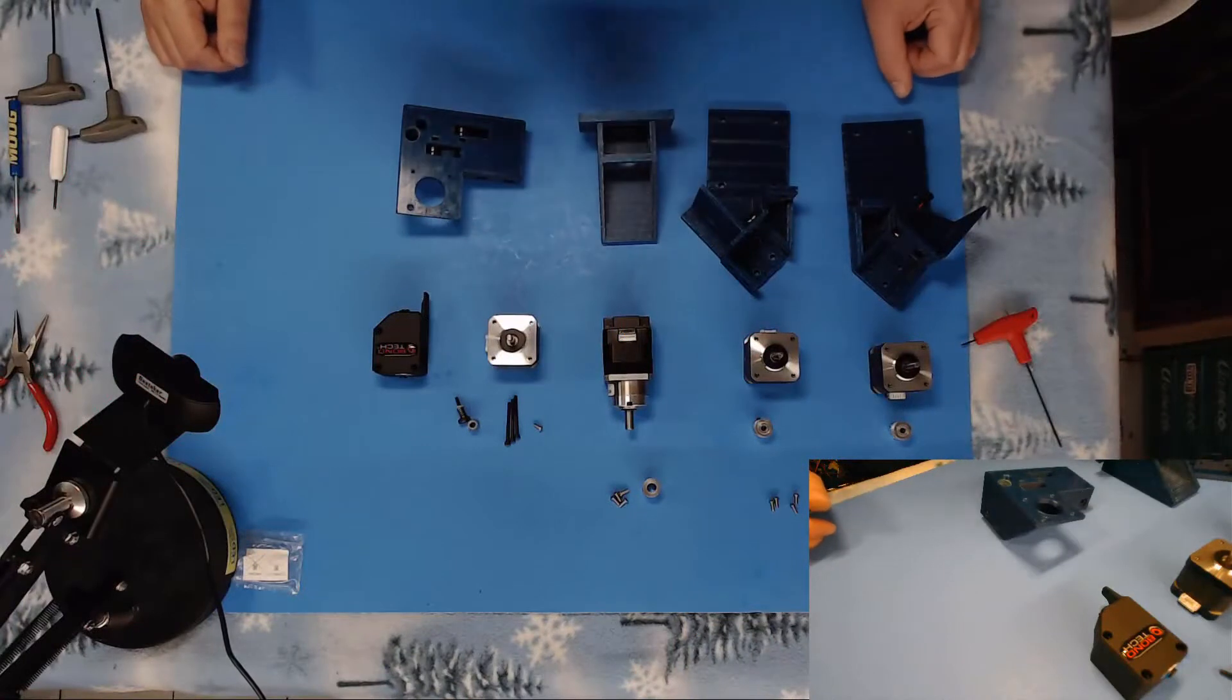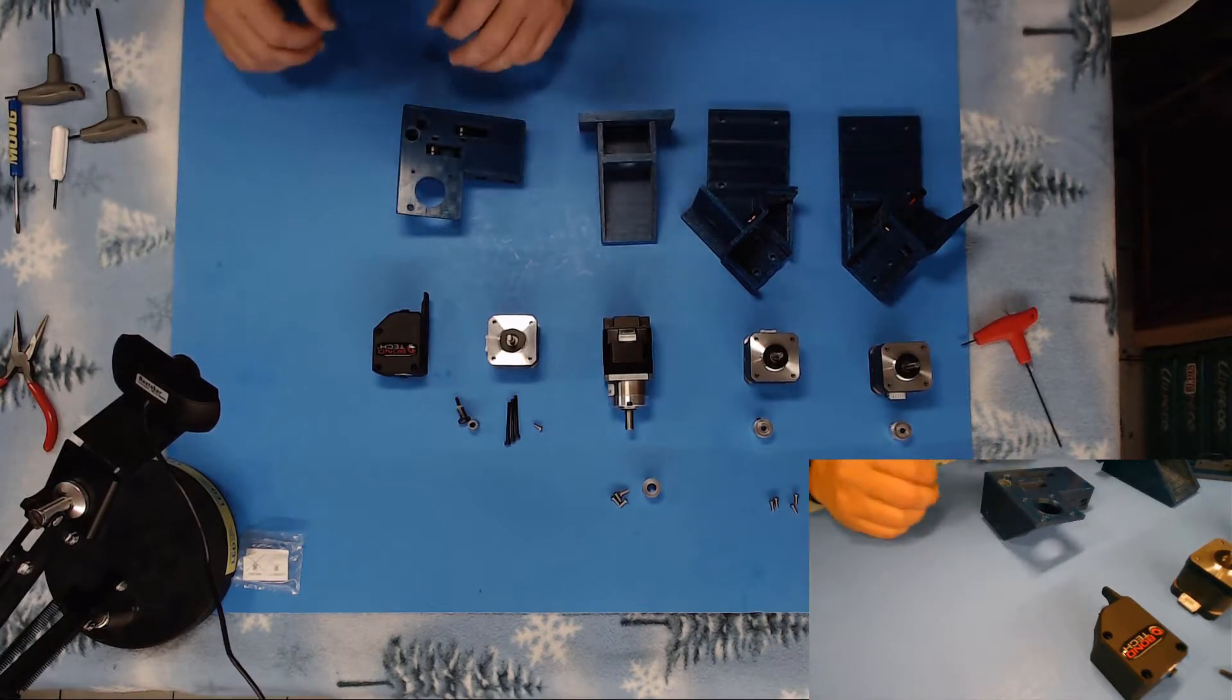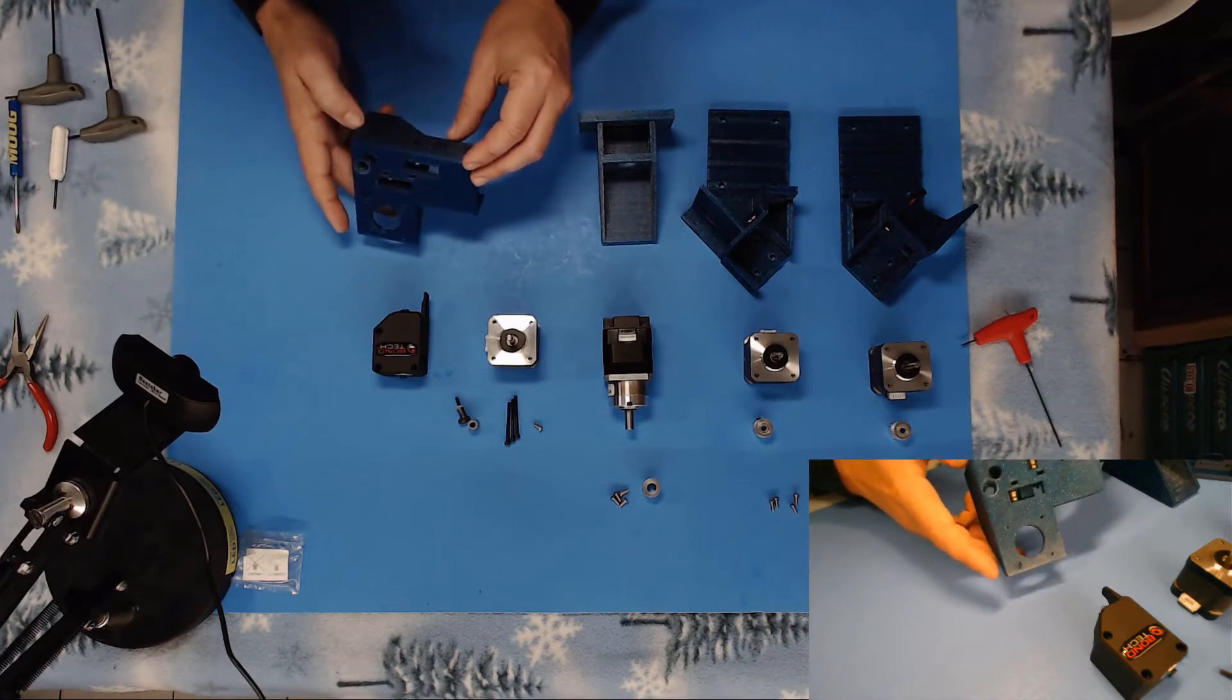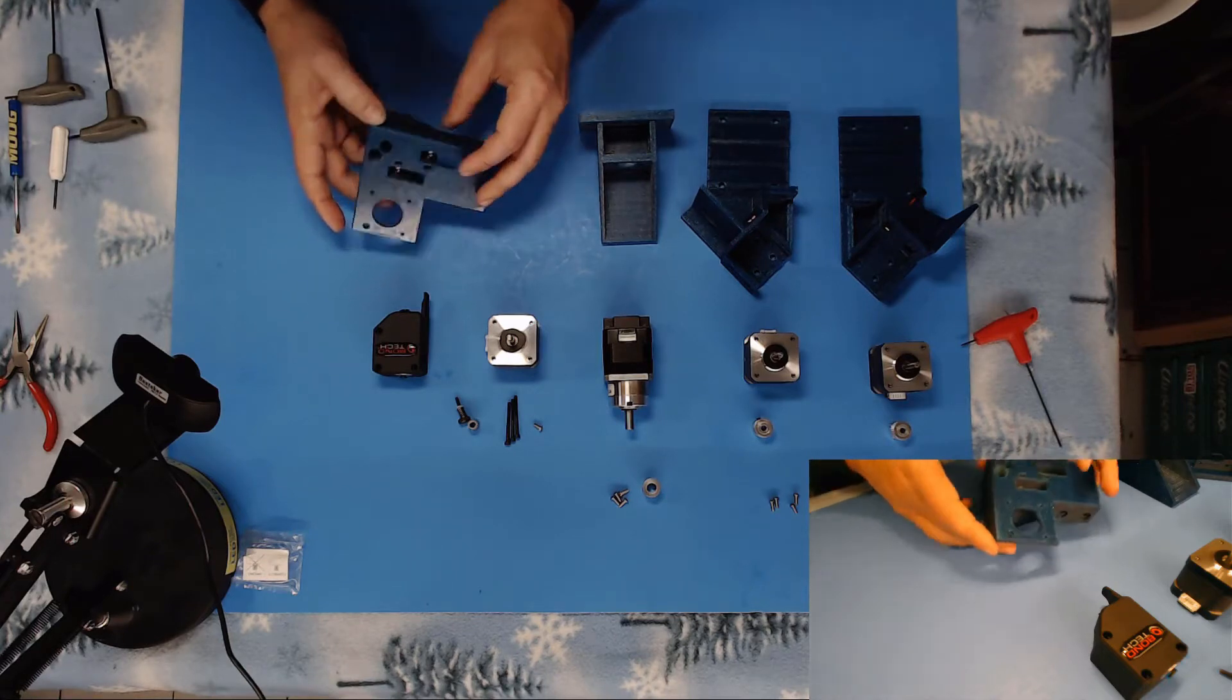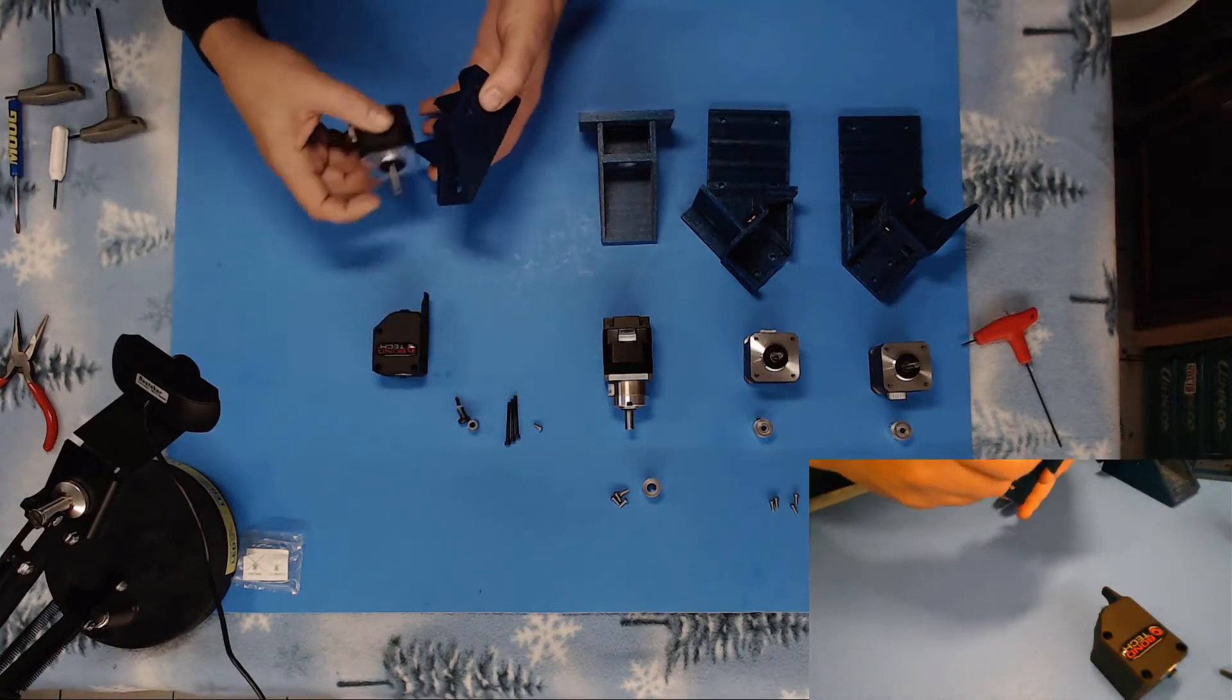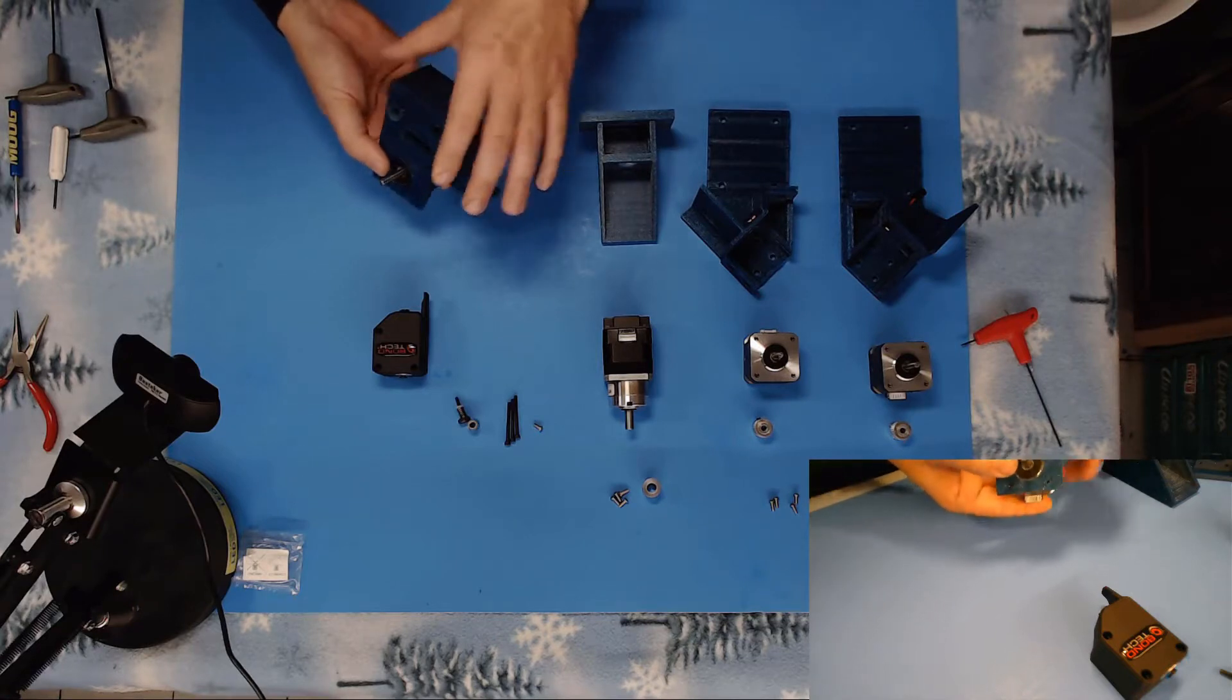All right, so in this segment we're going to go ahead and mount all of our stepper motors into their prospective pieces. I'm going to start off with mounting our extruder stepper. It goes up in the right idler bracket. You take to mount your stepper motor with the plug facing out the bottom like this.